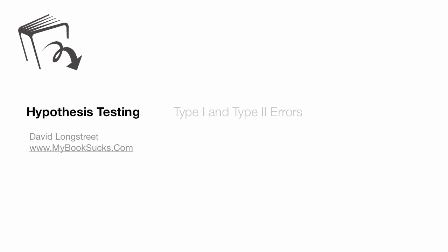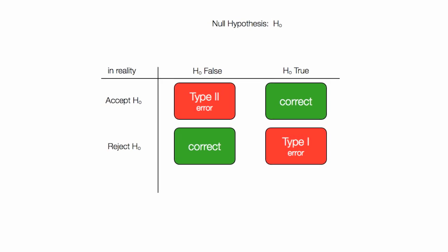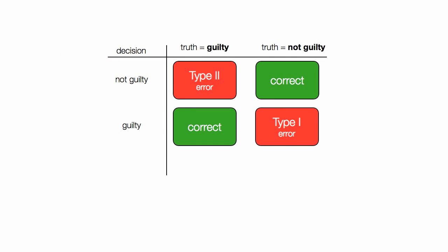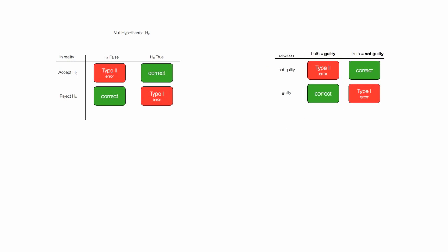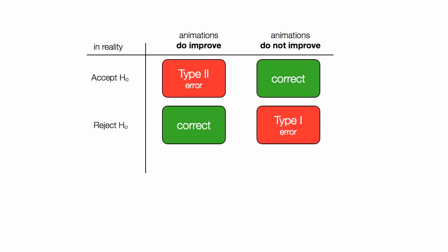In this tutorial, I'm going to discuss hypothesis testing and, in particular, type 1 and type 2 errors. You'll typically see tables like this in your statistics book. I'm going to discuss this table, but first I'm going to talk about truth and innocence, guilt and not guilty, and how we use the same ideas of hypothesis testing. I'm also going to discuss some of my animations and how they either improve or don't improve SAT math scores.